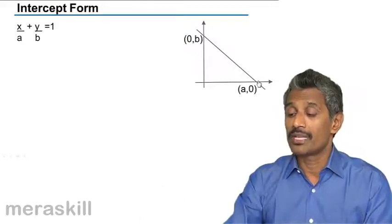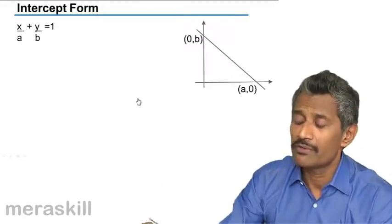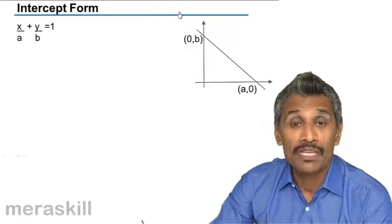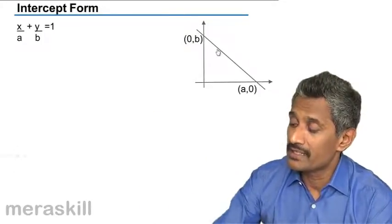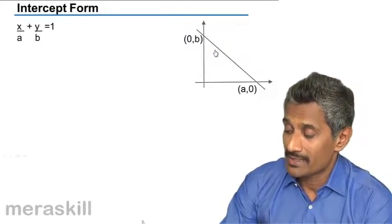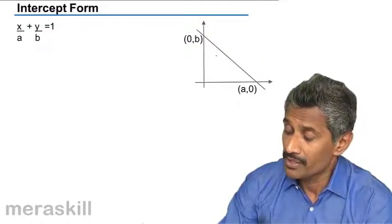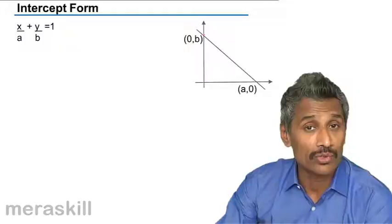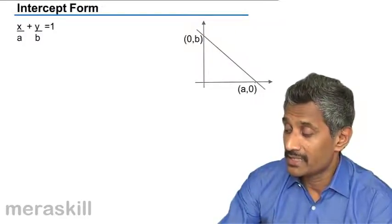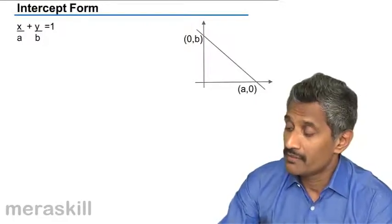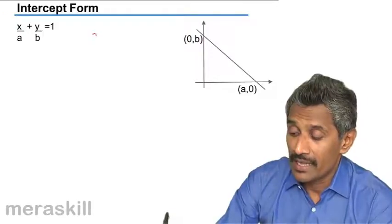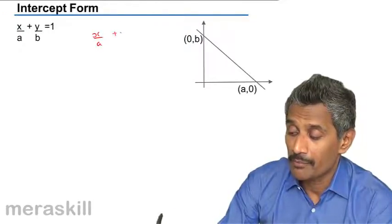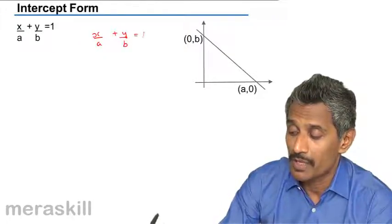There are a few more things that are in store for us. We have the various forms of equations of lines that intersect the x-axis and y-axis. Now here you have a line which intersects the y-axis at 0 comma b and x-axis at a comma 0, then we can write the equation as x upon a plus y upon b equals 1.